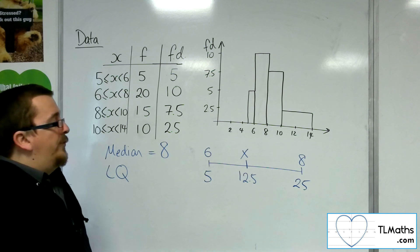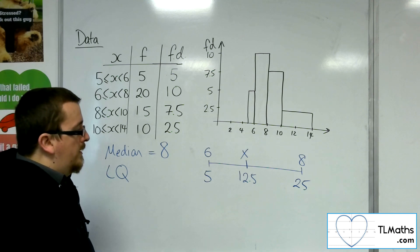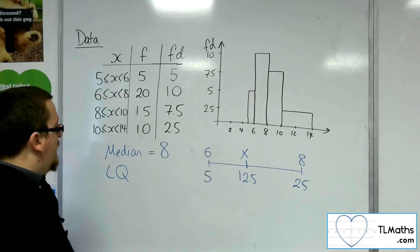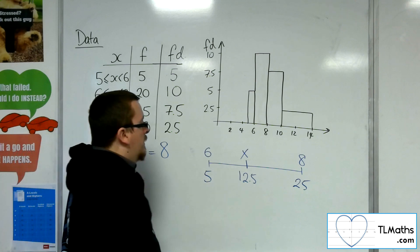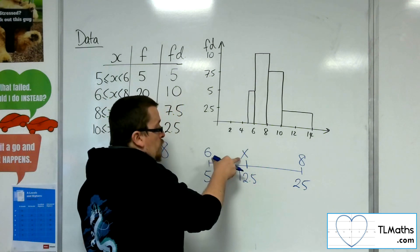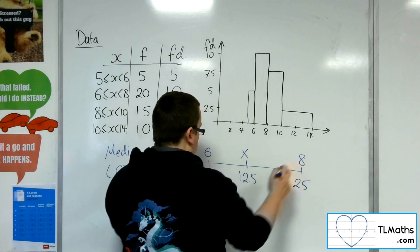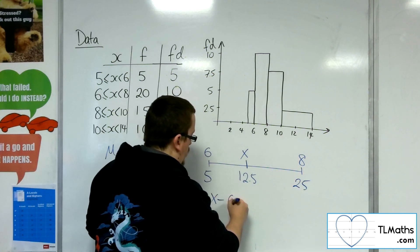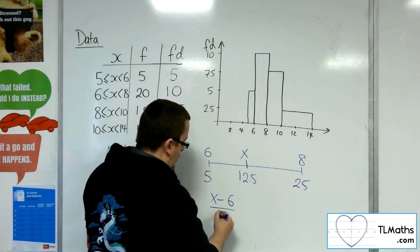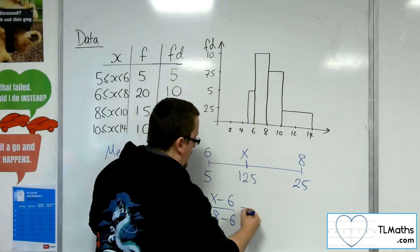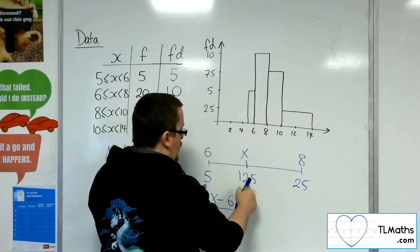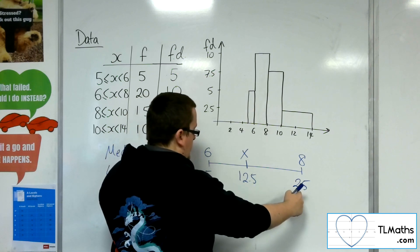So you use this method of interpolation, as it's called, in order to find that lower quartile. So the idea is the ratio of that distance to that distance. So the ratio of x to 6 and 8 to 6 is the same as the ratio of that distance to that distance.